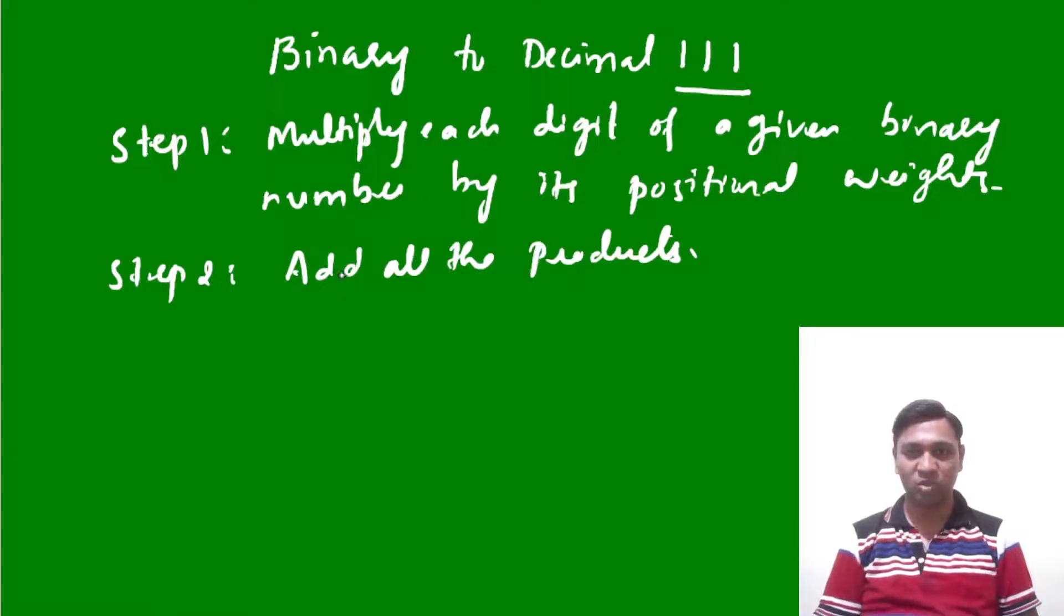So the leftmost bit is one. I'm going to write 1 × 2². The next bit is also one. Here I'm going to write 1 × 2¹.